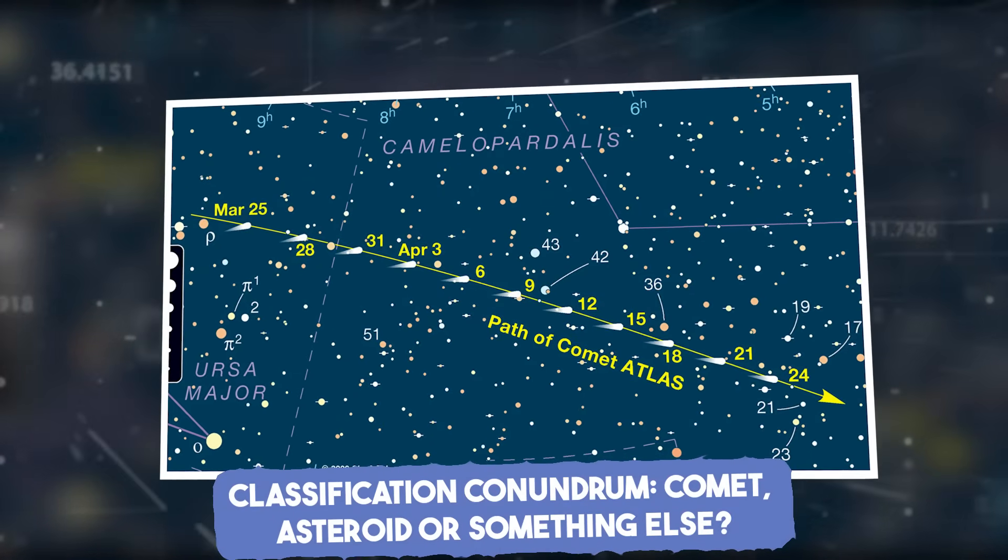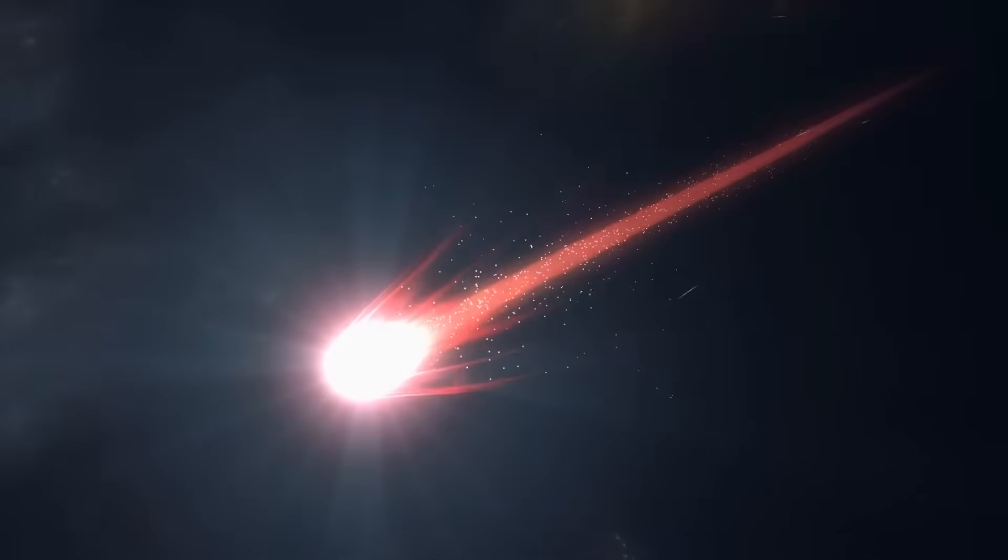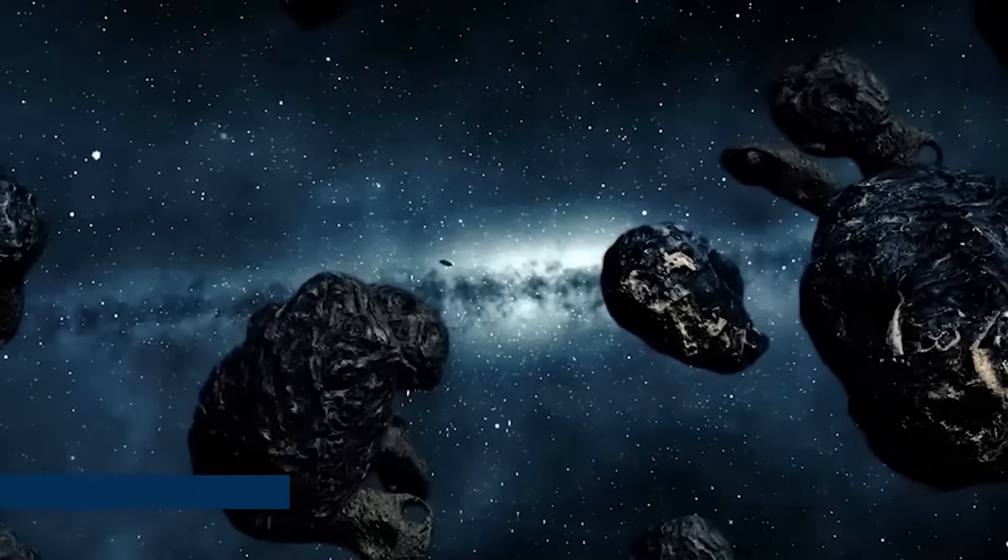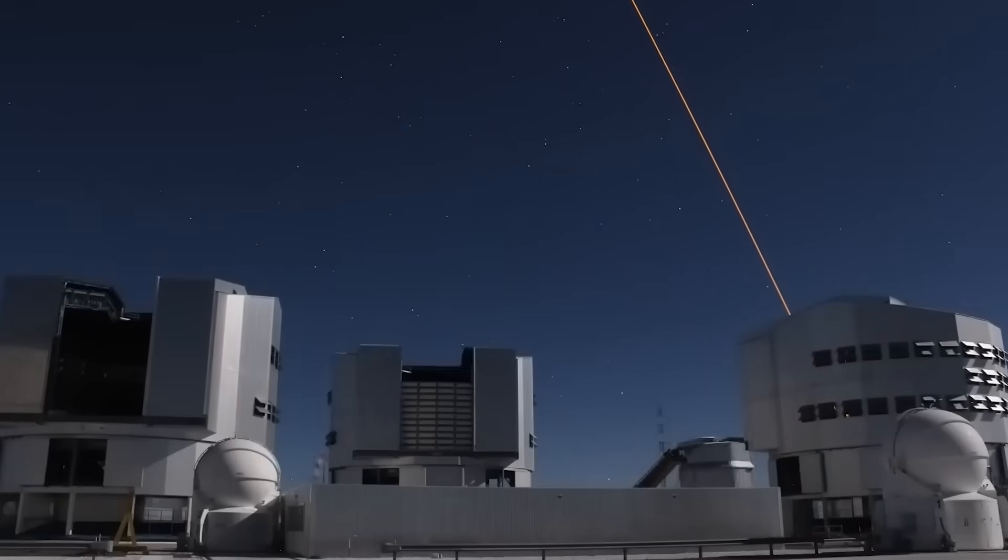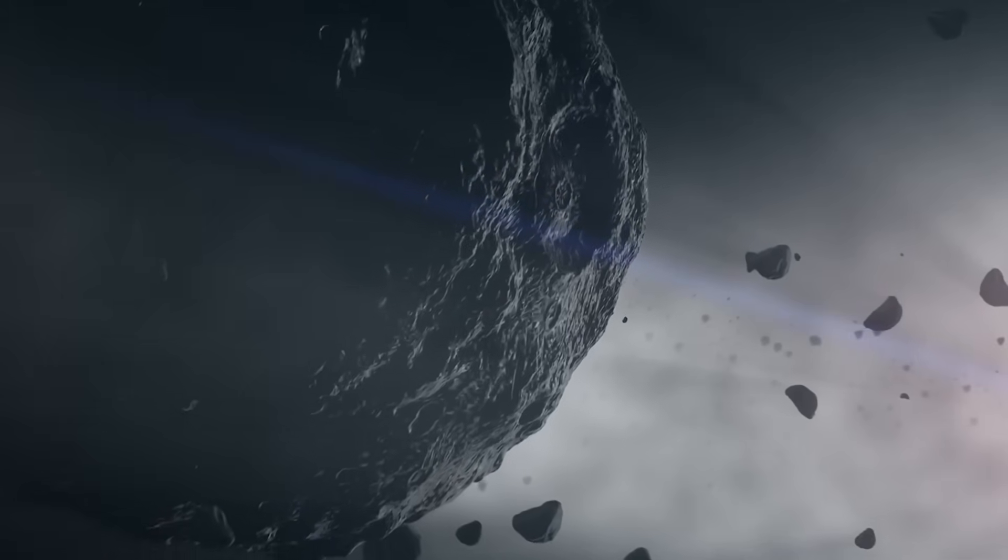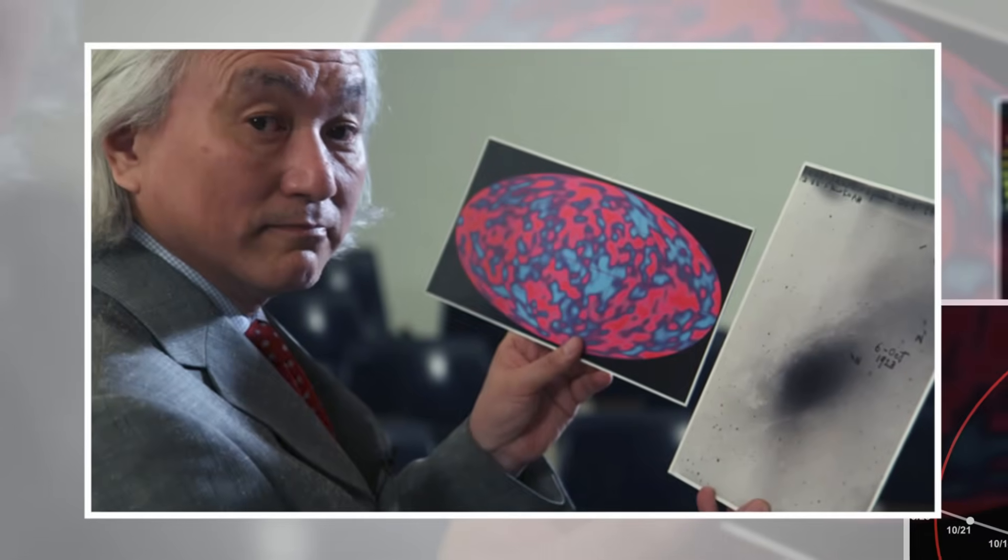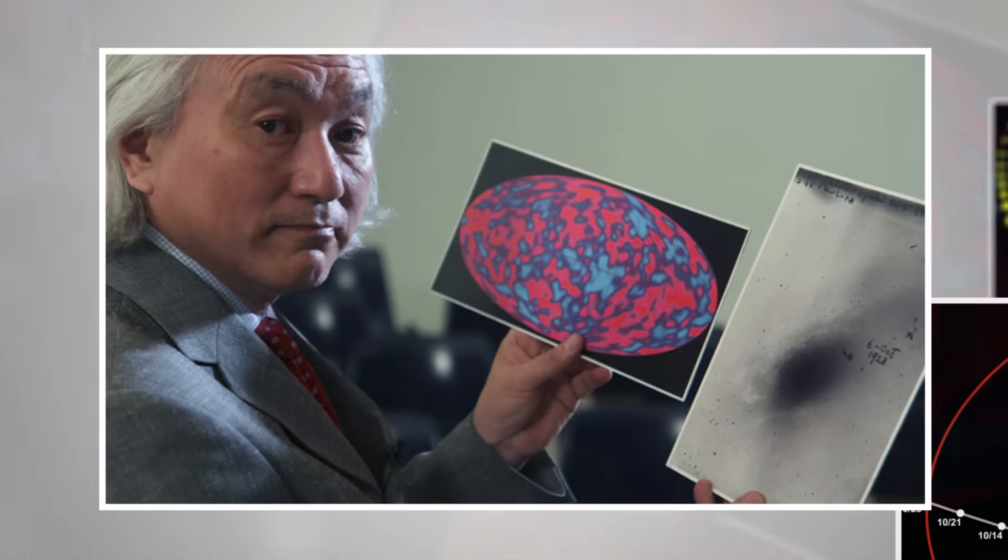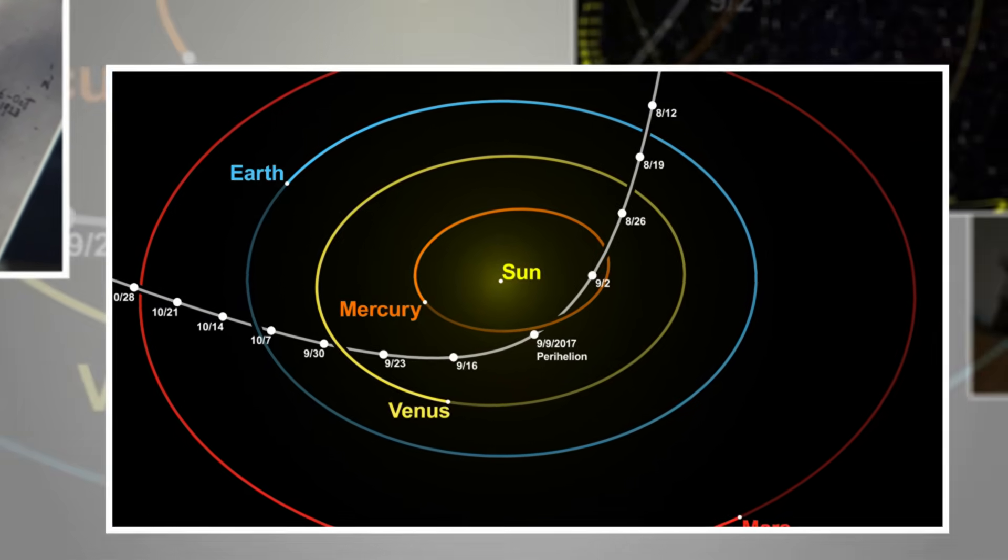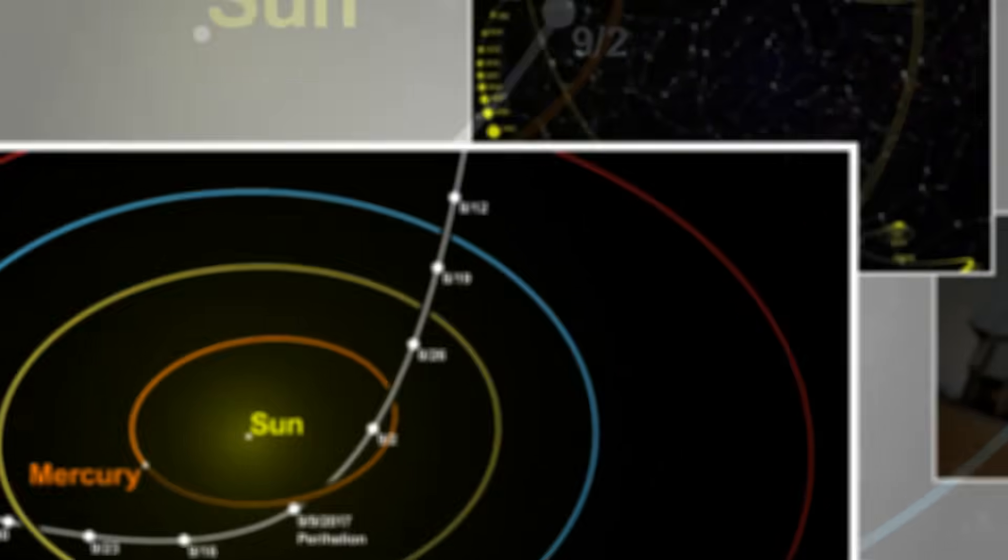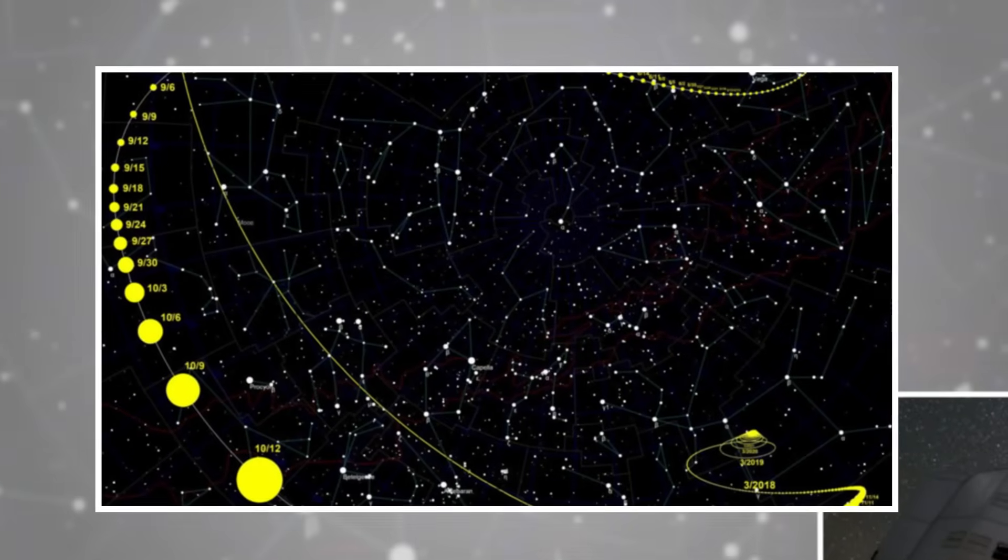Classification conundrum. Comet, asteroid, or something else. From the beginning, 3i/ATLAS didn't behave like a normal comet. It lacked a distinct coma. Its tail was inconsistent. And its light curve wasn't shaped by solar heating the way we'd expect. And yet, it wasn't quite an asteroid either. The object's low reflectivity, strange outgassing, and rotating brightness pattern suggested something in between. Normally, comets from our solar system display a well-understood set of behaviors. They heat up, spew gases, and form visible tails aligned with the sun. But 3i/ATLAS broke that logic. Its structure seemed more like a fragment. Perhaps an icy shard from a planetary collision than a classical comet.